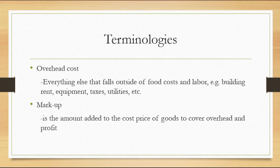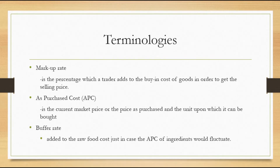Next, we have overhead costs — ito yung costs outside of food costs and labor, tulad ng renta, equipment, taxes, or yung kuryente o tubig. Markup — ito yung amount na ina-add natin sa cost price of goods to cover the overhead and profit. Kailangan natin talaga ng markup kasi dito tayo kumukuha ng tubo at yung pambayad doon sa renta or electricity at sa mga ibang overhead expenses. So we have markup and markup rate — markup rate is by percent. Next, we have as-purchase cost (APC) — ito yung current market price or the price as-purchased and the unit upon which it can be bought. For example, sa recipe nakalagay we need 2 tablespoon sugar. Hindi ka pwedeng bumili lang ng 2 tablespoon sugar sa market, so bibiliin mo siya ng per kilo — per kilo ay 30 pesos. So yung APC mo is 30 pesos per kilo.